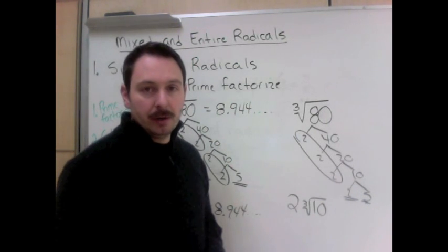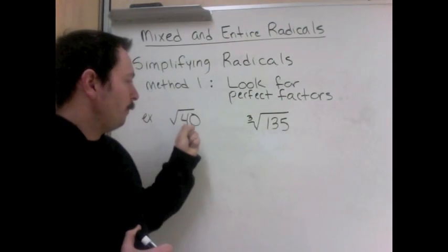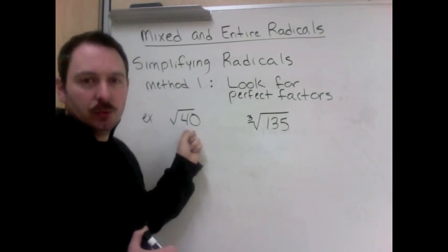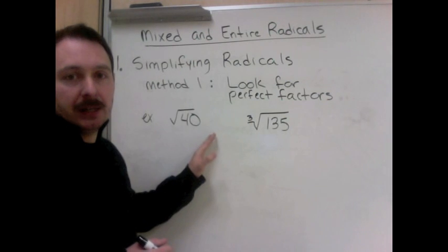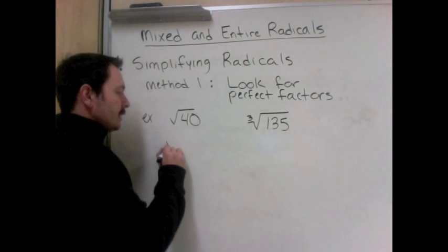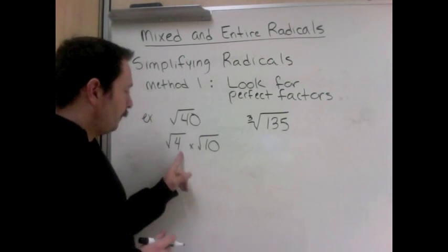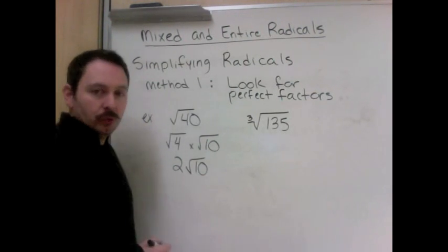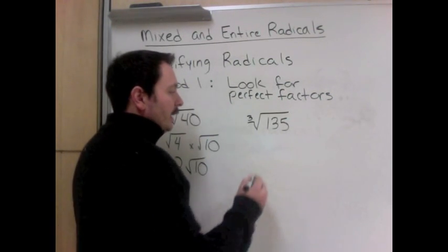Method 2 of simplifying radicals is going to be look for perfect factors. So what I'm looking for, for a square root I'm looking for perfect squares: 1, 4, 9, 16, 25. It's all the numbers that get square rooted perfectly. And 40 I know in my head that the biggest perfect square in that is 4. So square root of 40 is 4 times 10. Remember you can multiply roots, so 4 times 10 is 40, and the square root of 4 is 2. So I have 2 root 10. Over here I know that one of the times tables for 135 is 27.